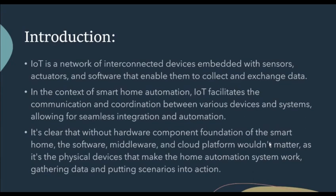Now let us first talk about IoT. IoT is a network of interconnected devices embedded with sensors, actuators and software that enable them to collect and exchange data. In the context of Smart Home Automation, IoT facilitates the communication and coordination between various devices and systems, allowing for seamless integration and automation. Without the hardware component foundation of the Smart Home, the software, middleware and the cloud platform won't matter, as it's the physical devices that make the home automation system work, gathering data and putting scenarios into action.